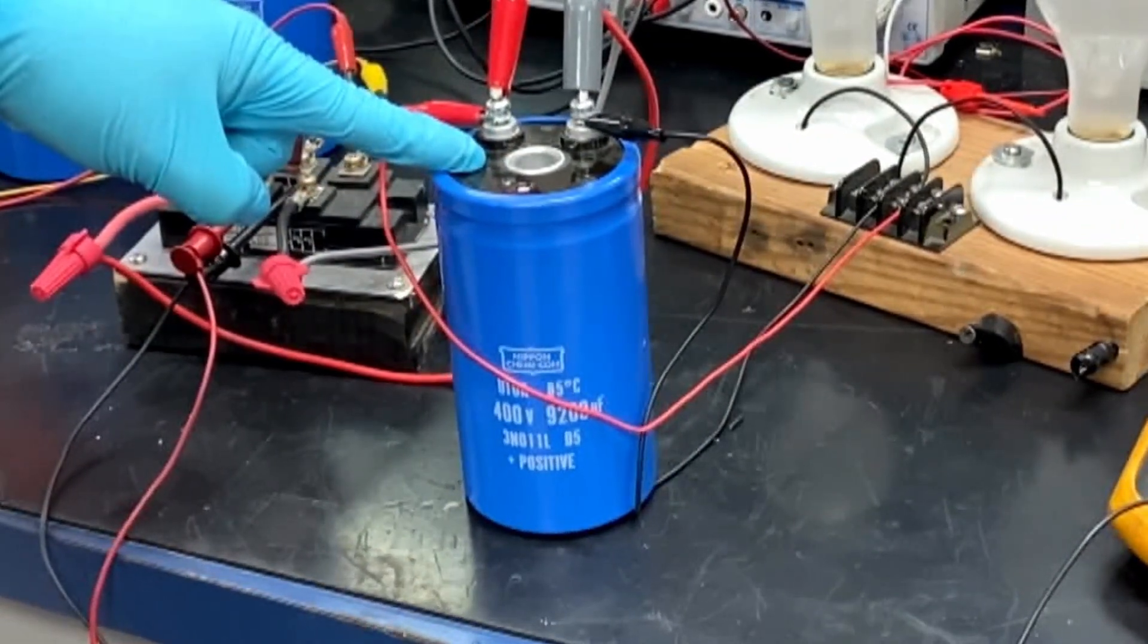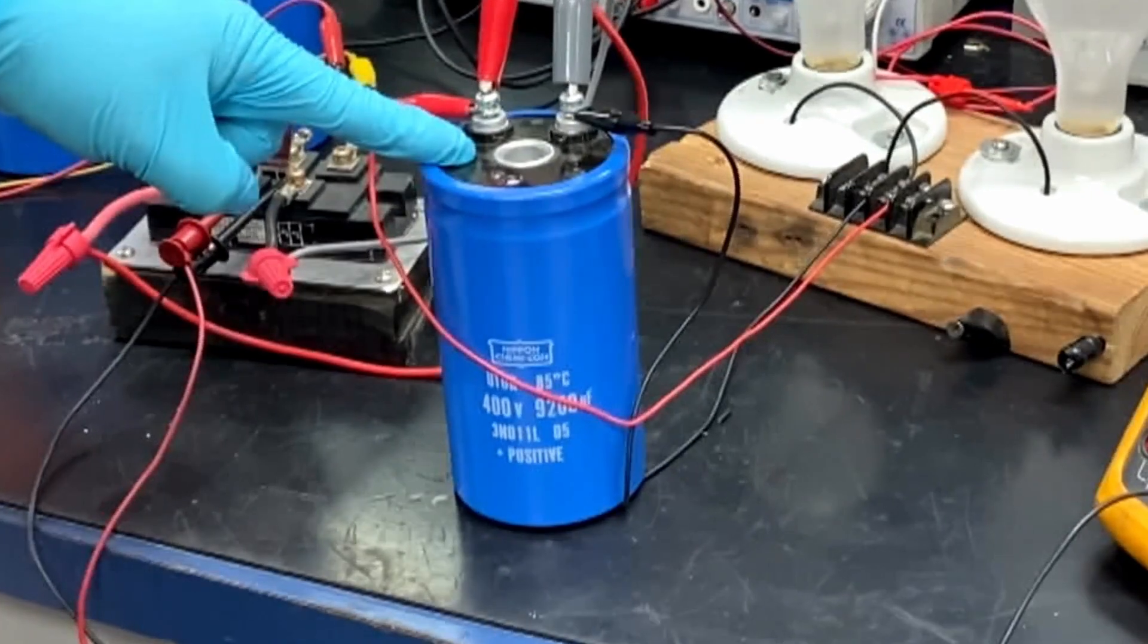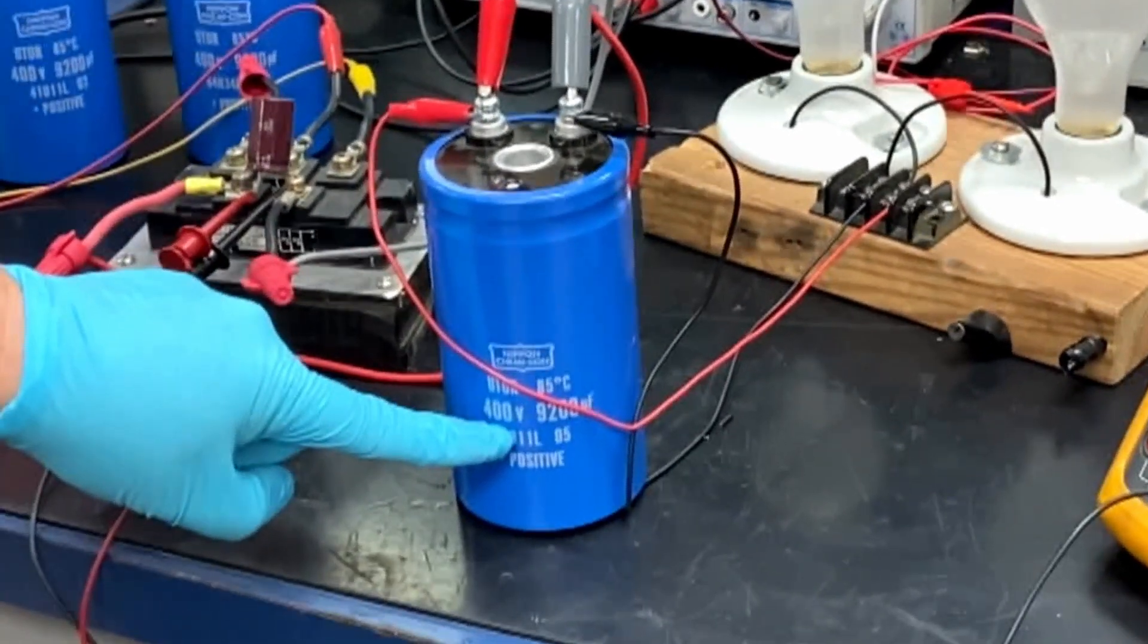The way a layer is formed within the capacitor is by applying a slow steady voltage, increasing until you get to the capacitor's rated value.